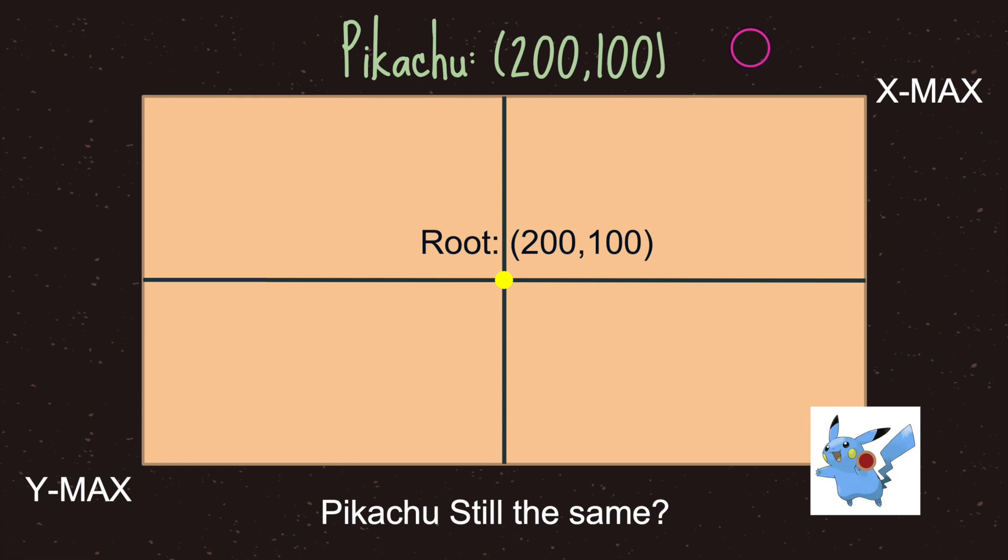And it's quite simple. Even though our root node in the game world or rather the game universe is at 200 100 what Pikachu sees is different. Pikachu sees that in Pikachu's world the universe starts at zero and zero.